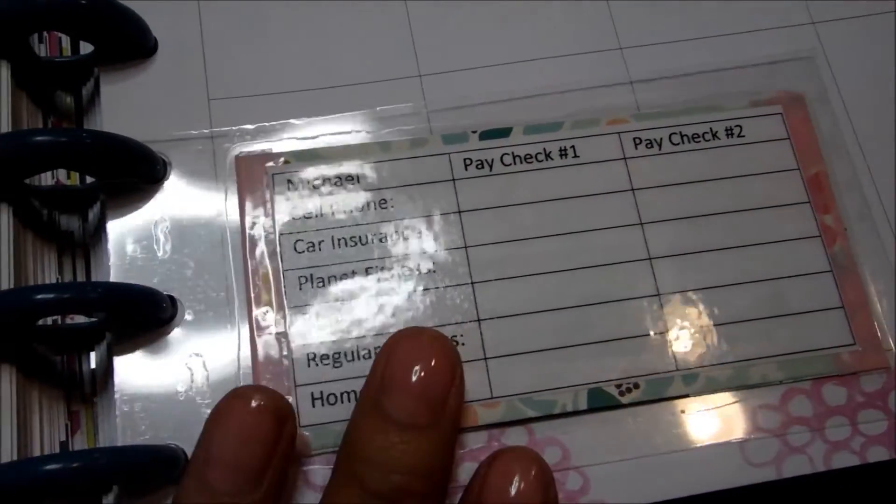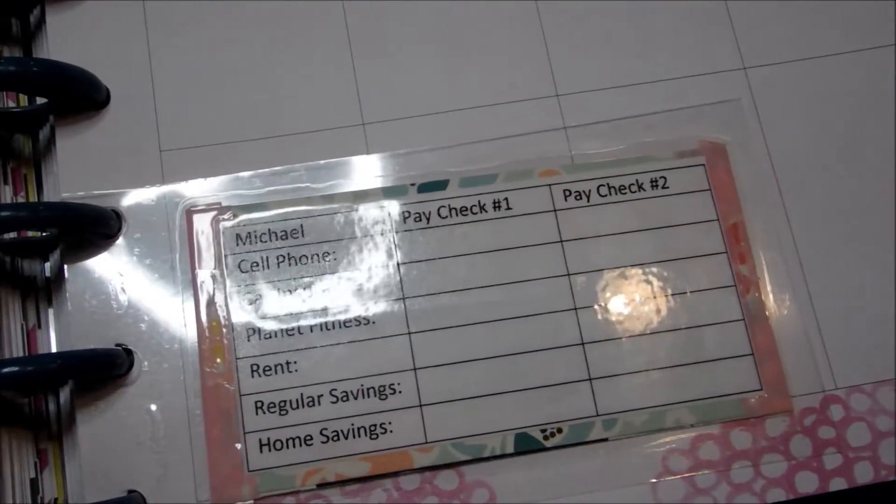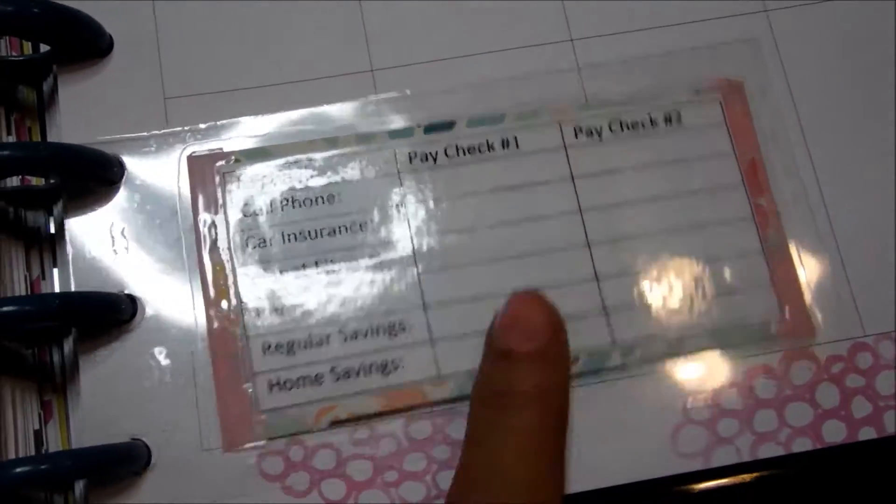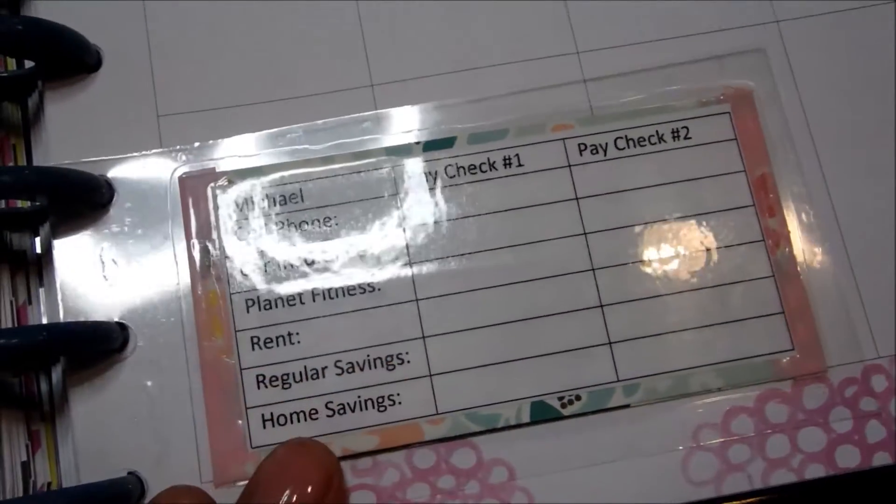So I hope you guys enjoyed this video on how to make this little finance tab that I'm doing for ourselves. And that seems to be working for us. And all I do is write things out and then I just erase them at the end of the month and then just use it again over the next month.